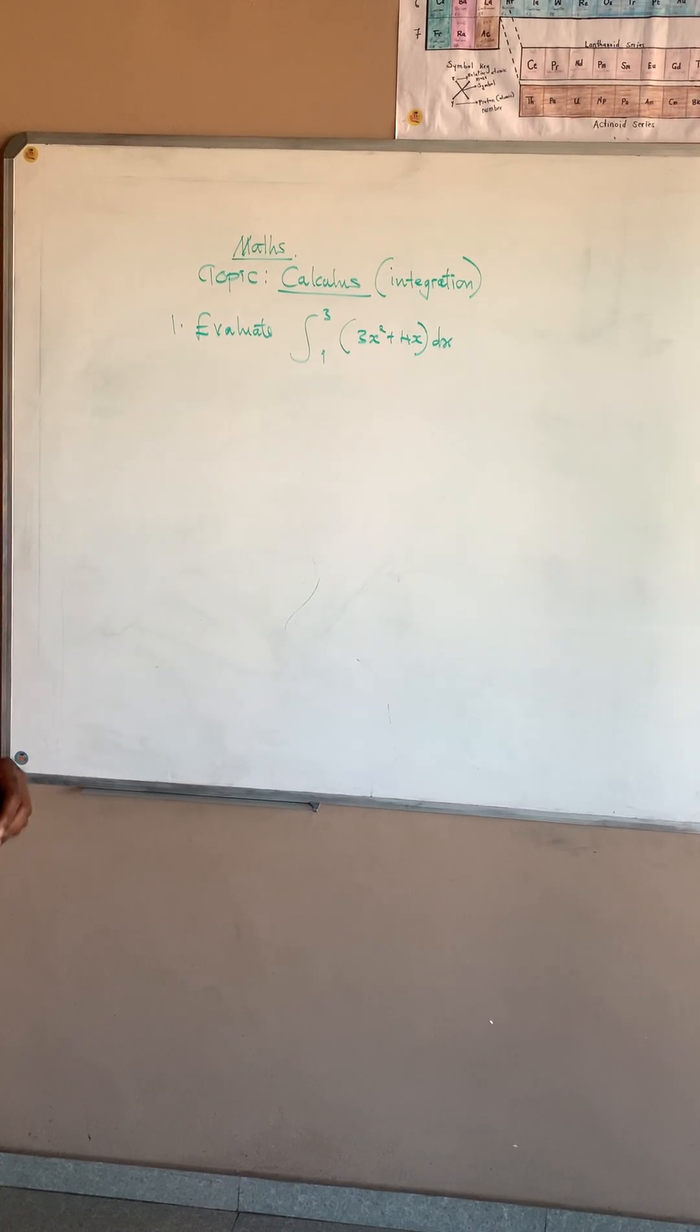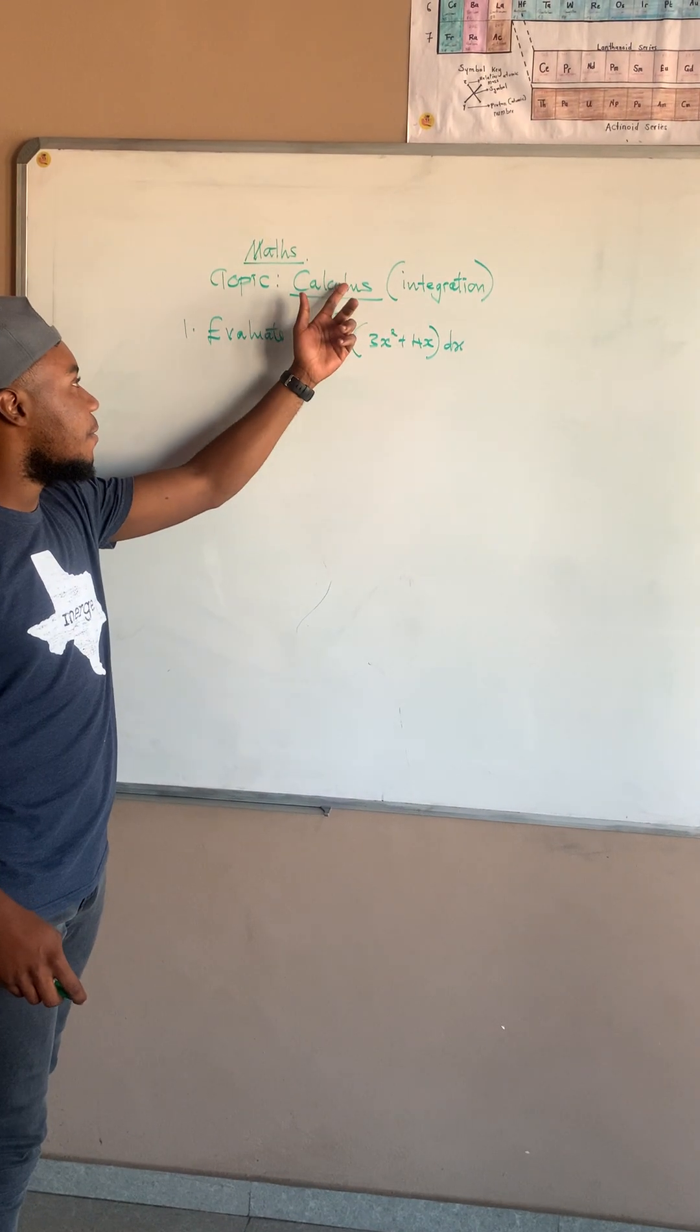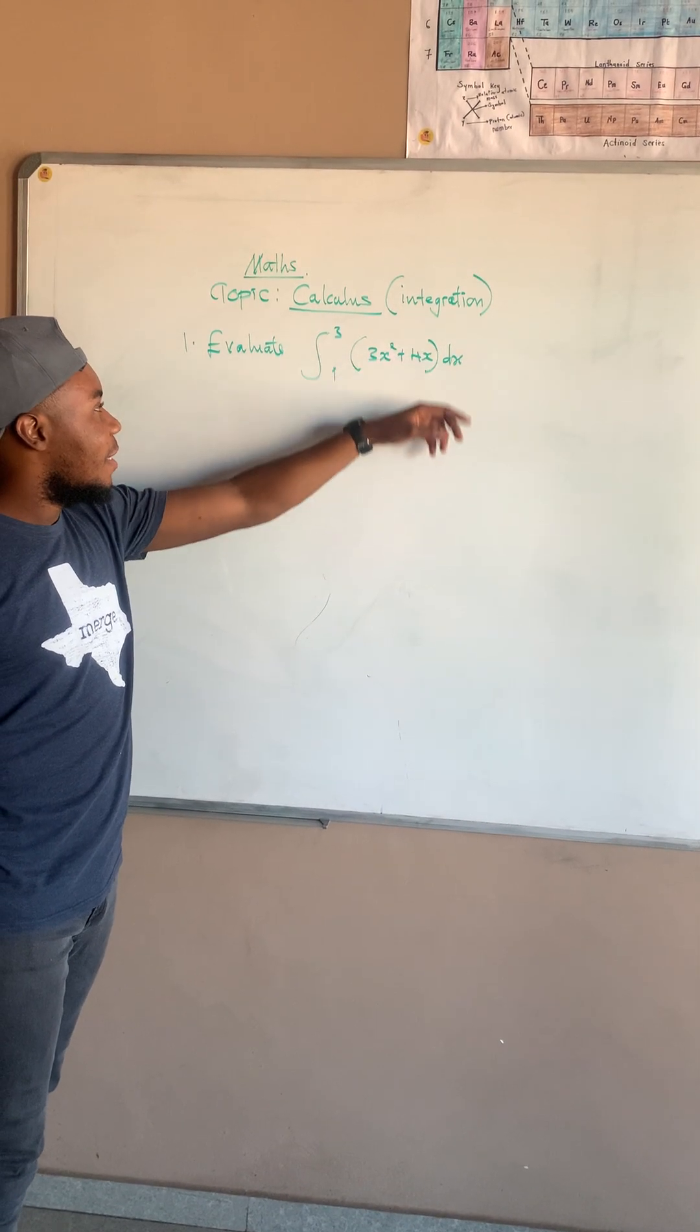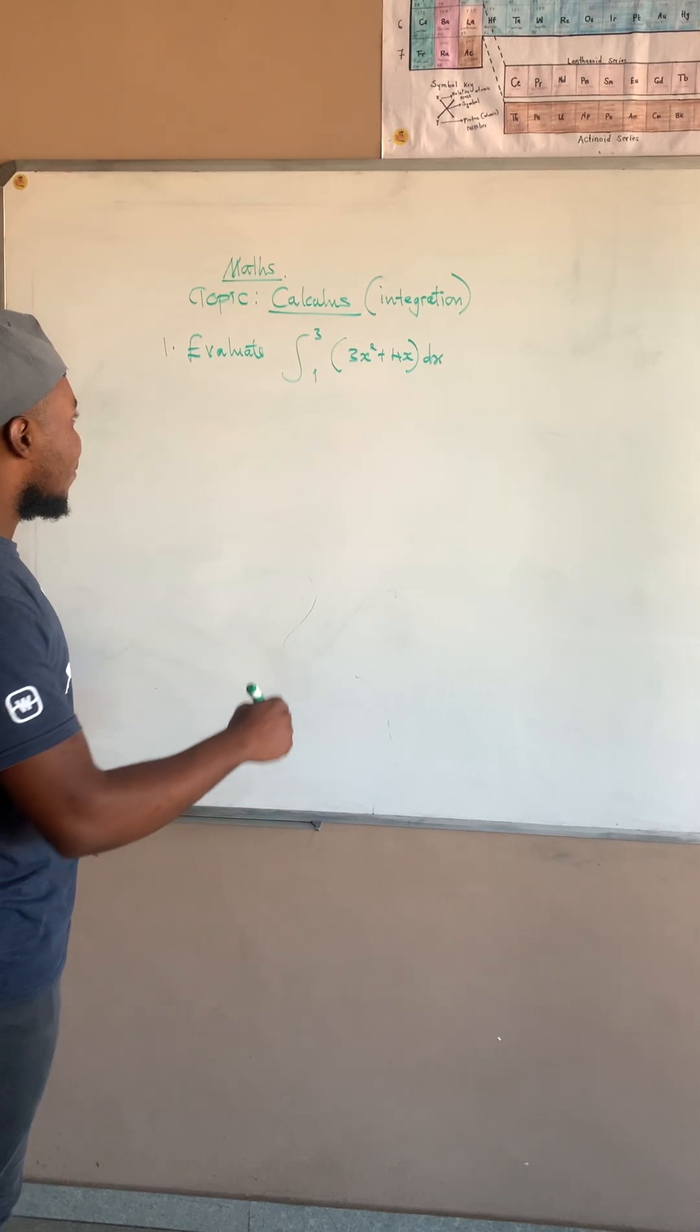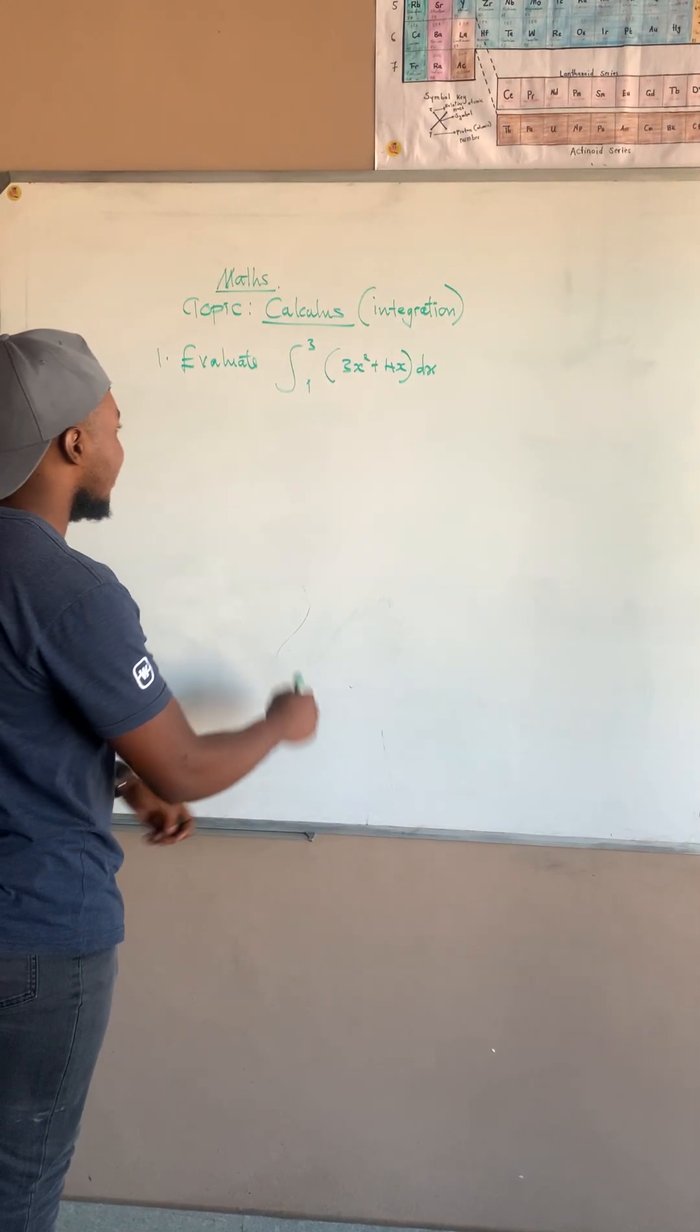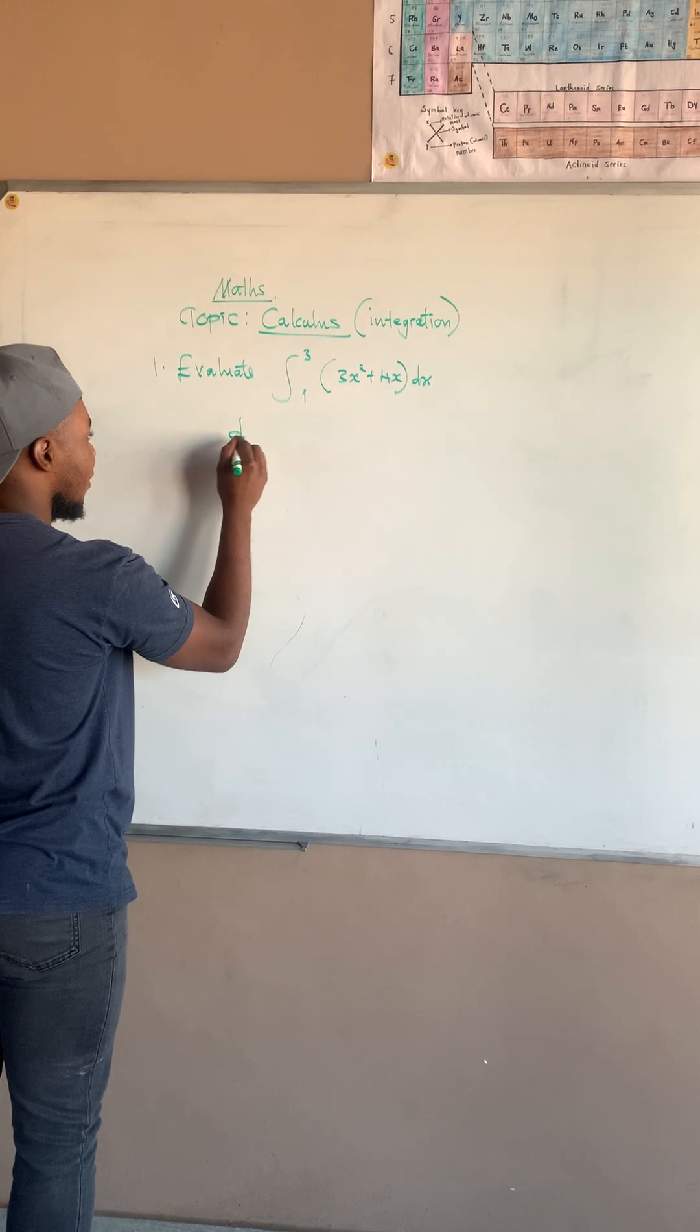Okay, so today we are looking at calculus and integration. This is the first question we're going to deal with. The first thing is that you have to integrate the equation where you say d over dx is equal to ax^(n+1) over n+1.